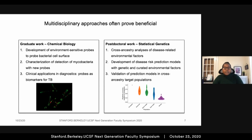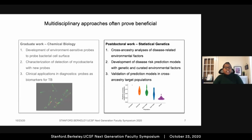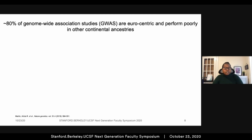Now I'll switch gears and talk about my postdoc work. I elected to spend my postdoctoral fellowship in a statistical genetics unit because when I think of equity in biomedical research, it begins with genetics as it is the foundation for biological insight and therapeutic development. Unfortunately, the field of human genetics has a long and deeply troubled history. Even now, most genome-wide association studies, which are important for downstream biological discoveries and proper clinical translation, are focused primarily on participants of European ancestry.